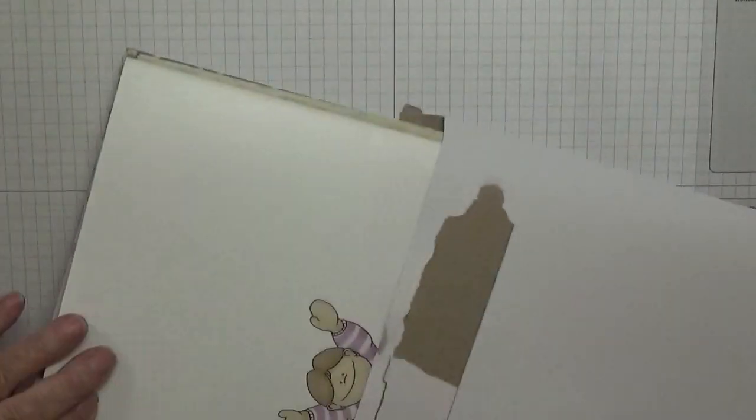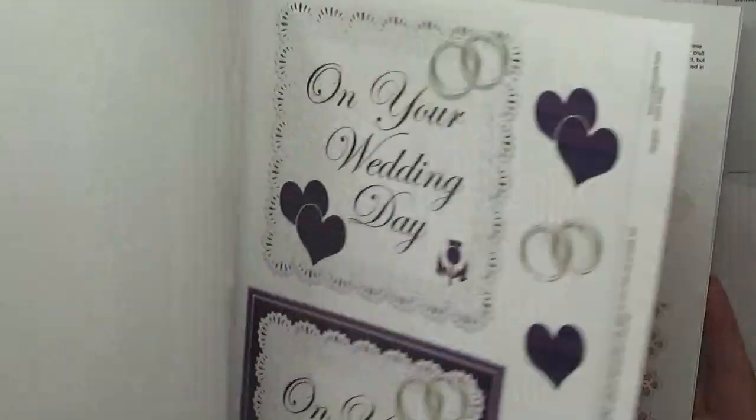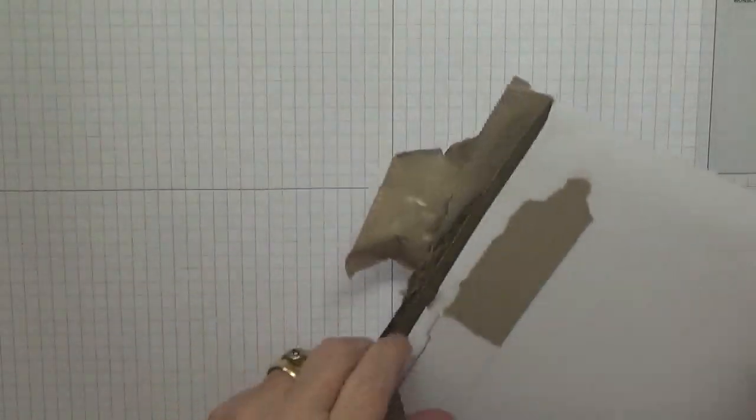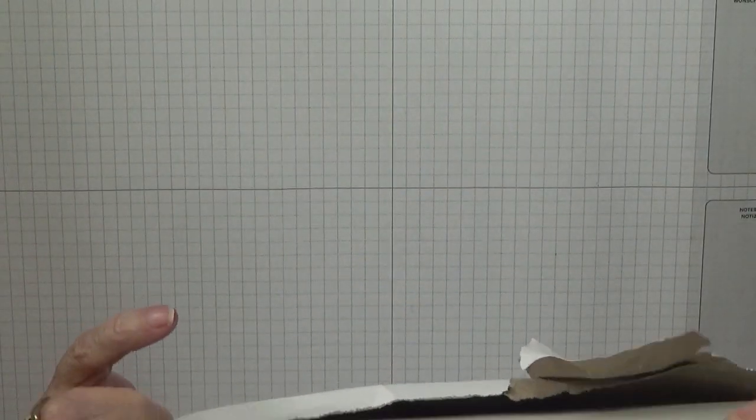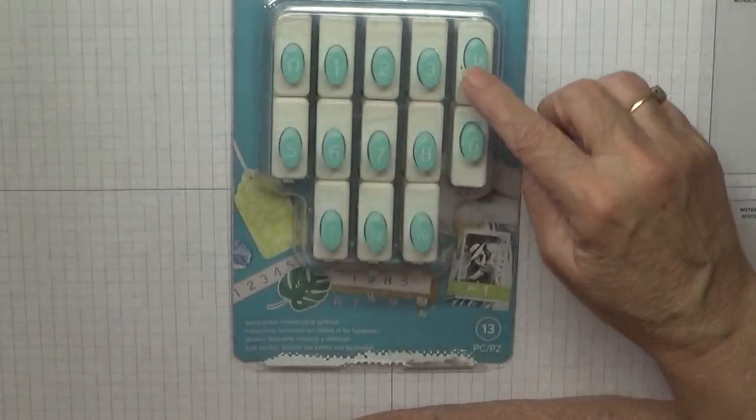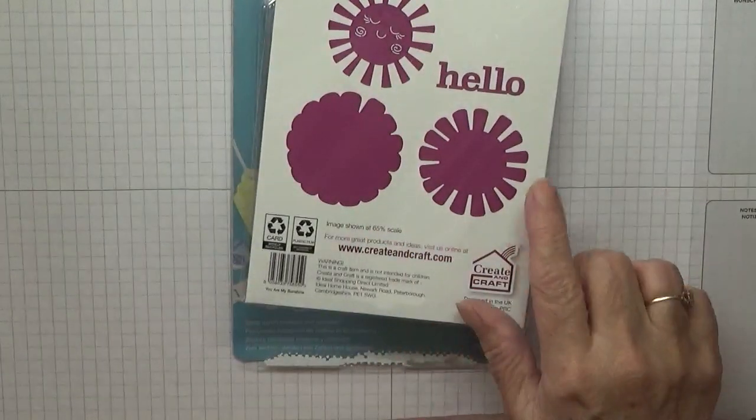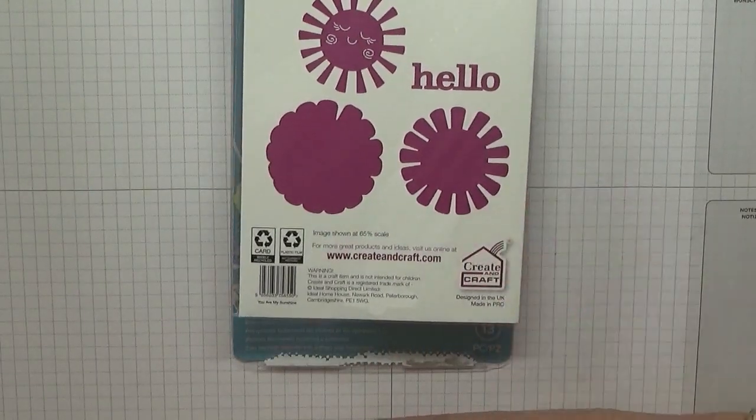The first thing we've got in this is just papers and some cut-outs, nothing spectacular. I probably won't use these but I know someone who will. We have Memory Keepers number punches, a sun and the word hello die, you are my sunshine.